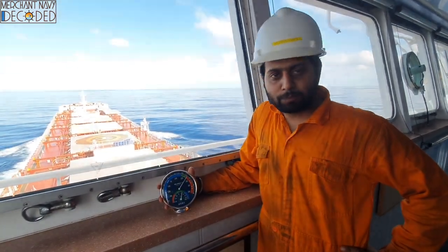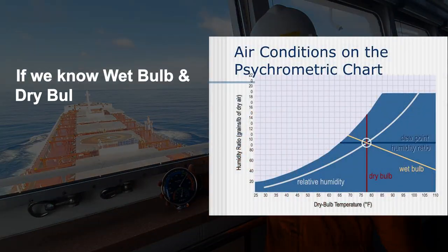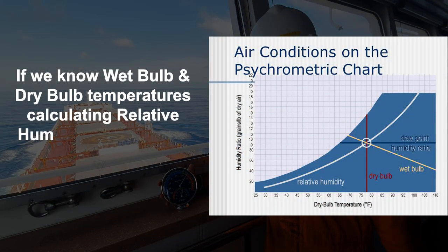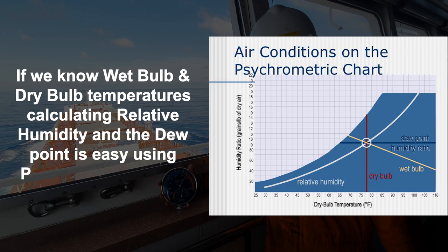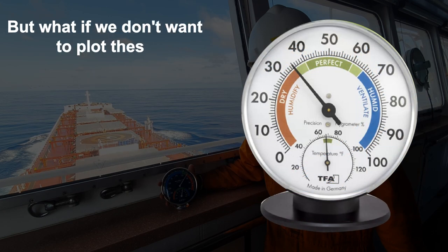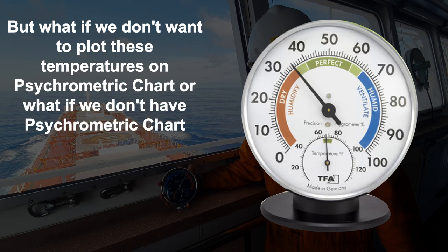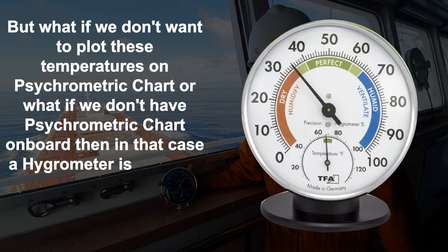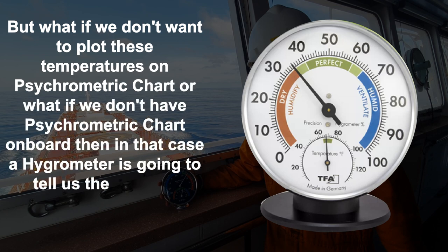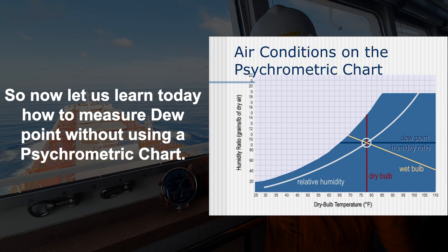If we know wet bulb and dry bulb temperatures, calculating relative humidity and dew point is easy using a psychometric chart. But what if we do not want to plot these temperatures on a psychometric chart, or what if we do not have a psychometric chart onboard? Then in that case, a hygrometer is going to tell us the relative humidity. But what about dew point?